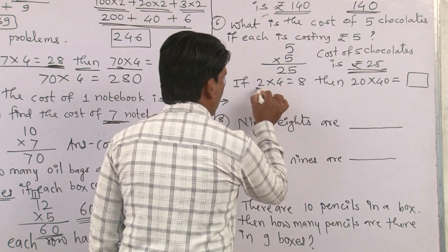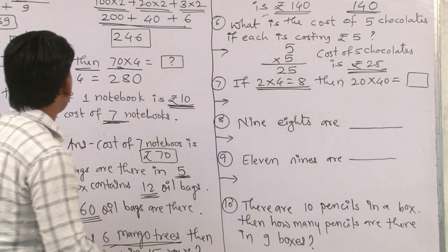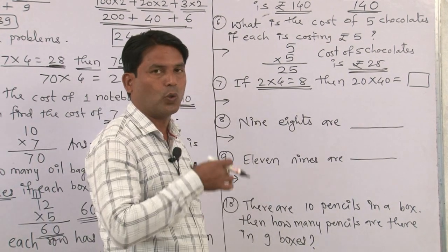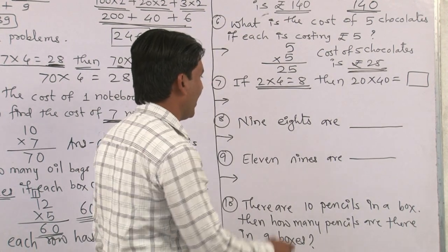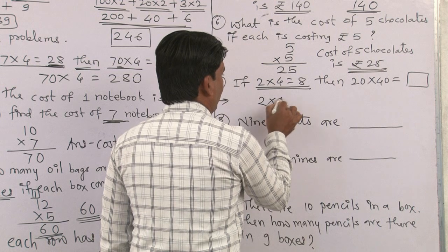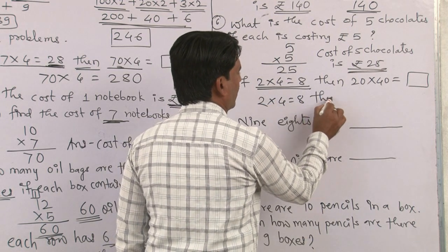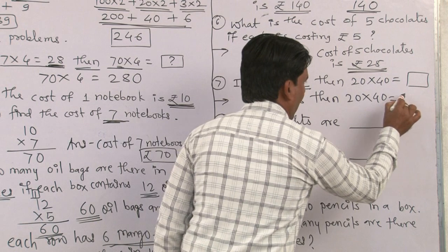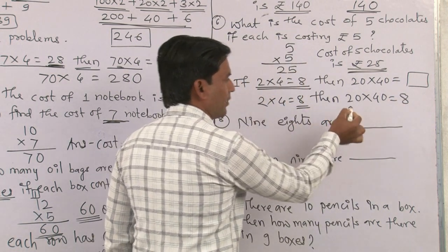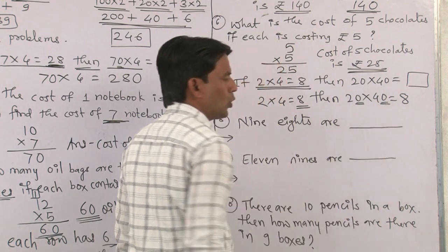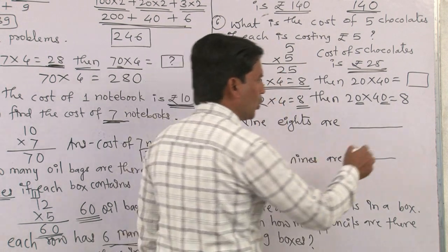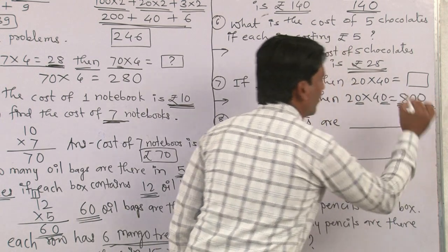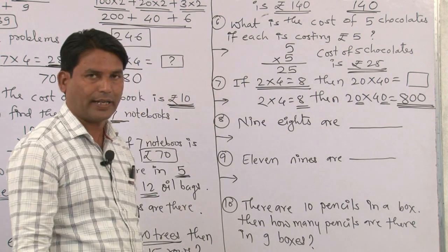Sixth word problem: What is the cost of 5 chocolates if each costs rupees 5? Multiplication: 5 multiplied by 5. We know the table of 5: 5 fives are 25. So the cost of 5 chocolates is rupees 25. Seventh: If 2 multiplied by 4 is 8, then 20 multiplied by 40 is what? Two zeros are added, so the answer is 800.